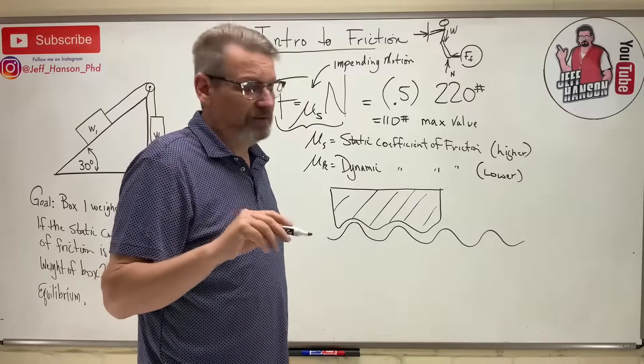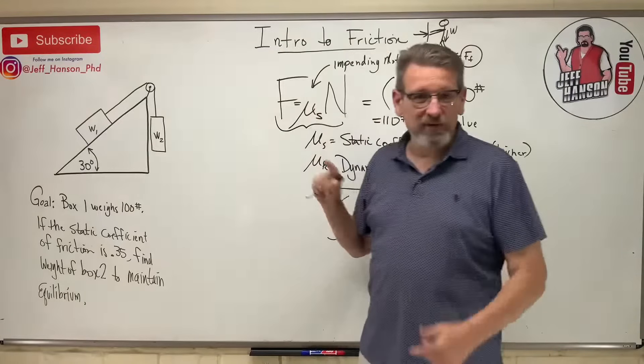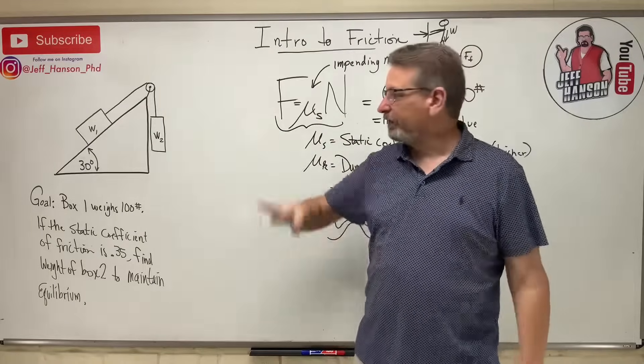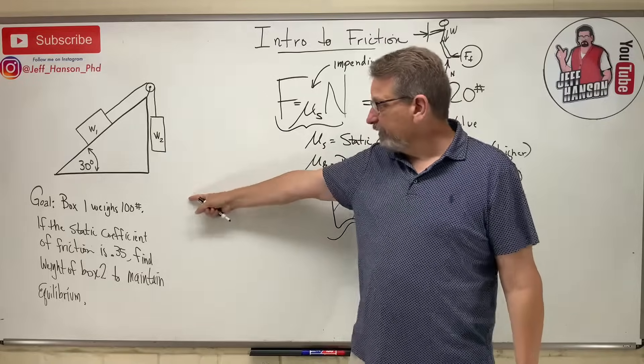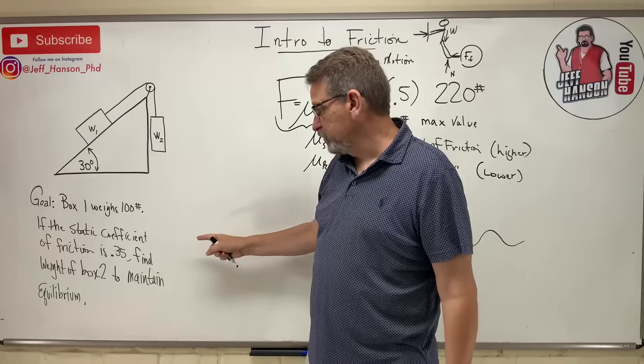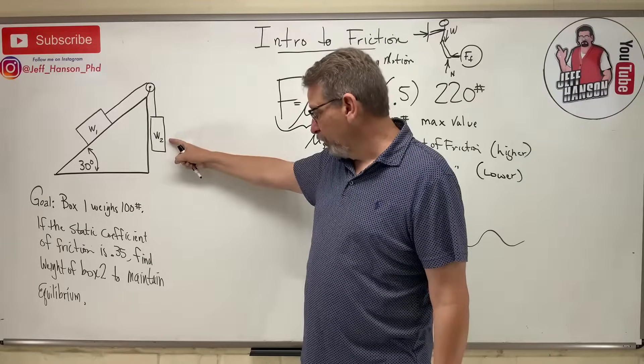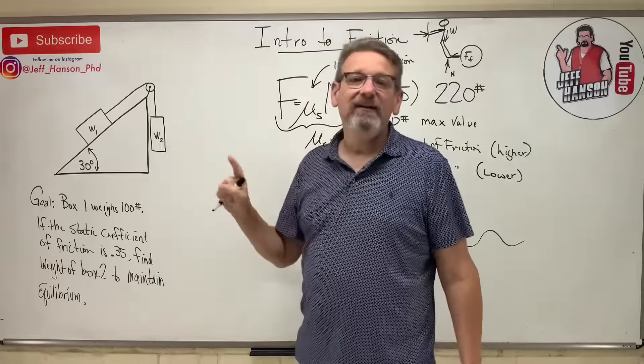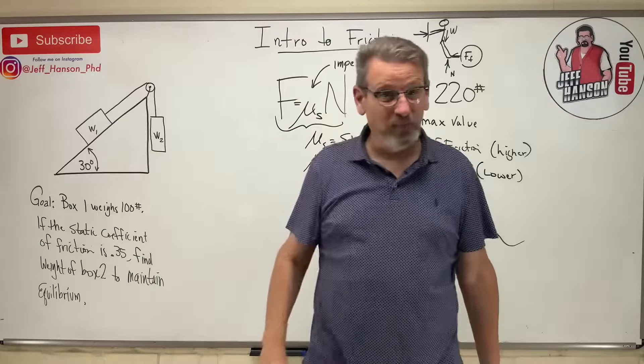So let's talk about an example problem. Let's talk about that one. If you have had a physics class, you have worked that problem before. It says box one weighs 100 pounds. So this guy right here. The static coefficient of friction between the ramp and the box is 0.35. Find the weight of box two to maintain equilibrium. So let me erase my board and let's work this problem out.